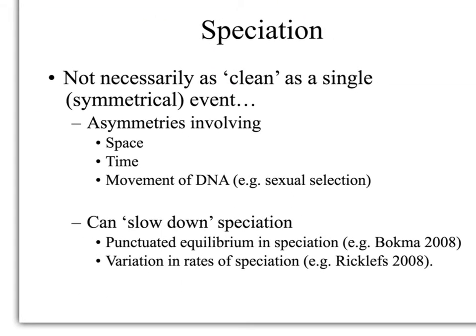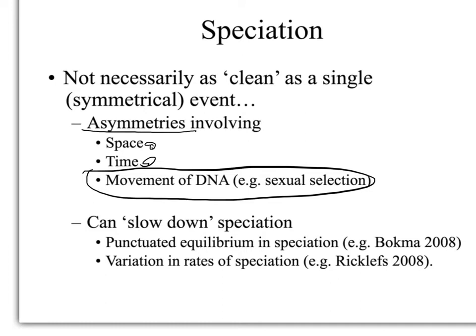The consequence of asymmetries in speciation is that it can actually slow down the process of speciation. Usually when we study speciation, we think about it as being a clean event, but the truth is that it's rarely actually a symmetrical event — there is usually some sort of asymmetry. That asymmetry can be in space, in time, or in the movement of DNA — meaning one population is going to send more individuals into the other population than is happening vice versa. The net result of this is going to be that it slows down speciation.